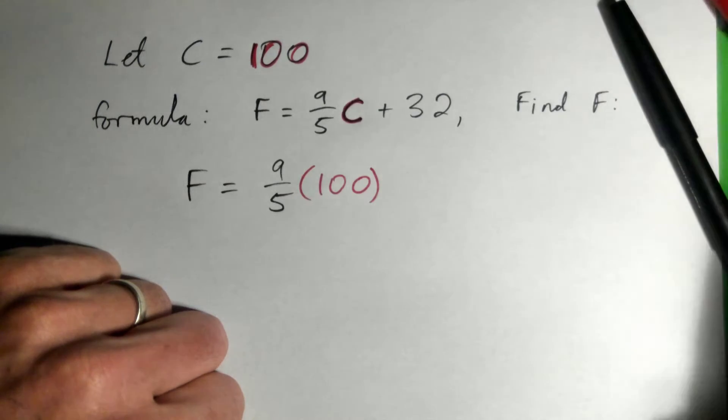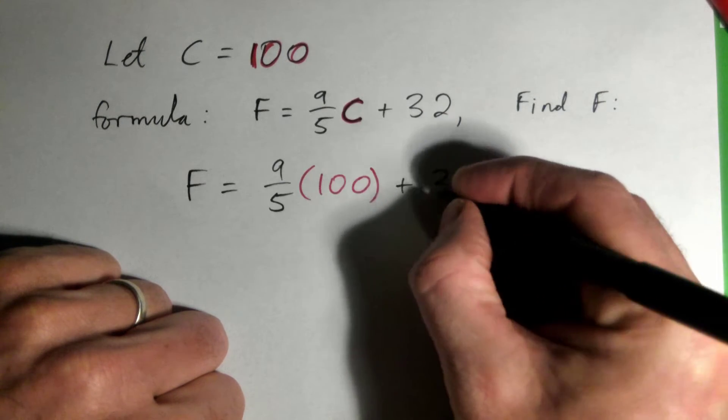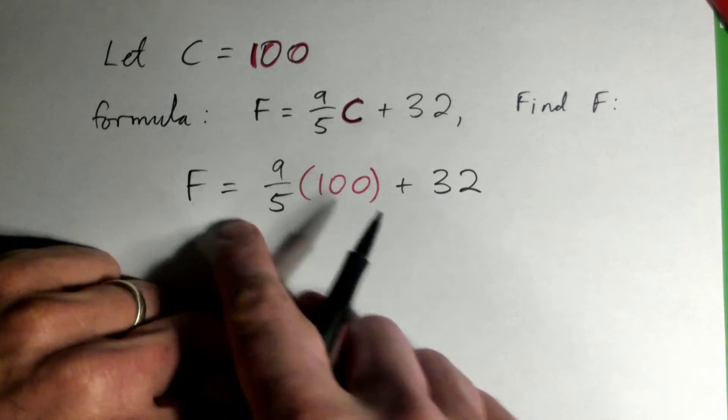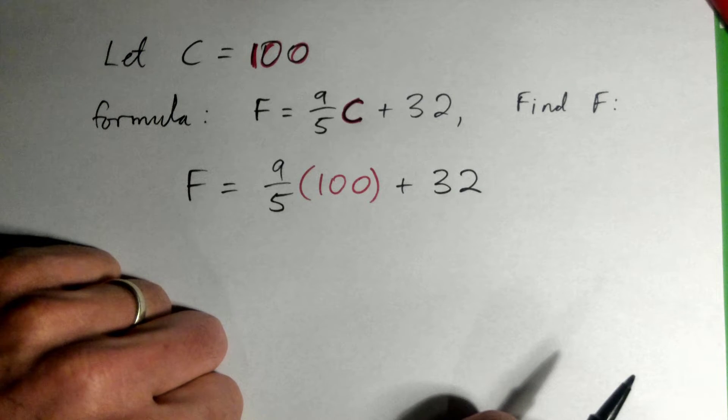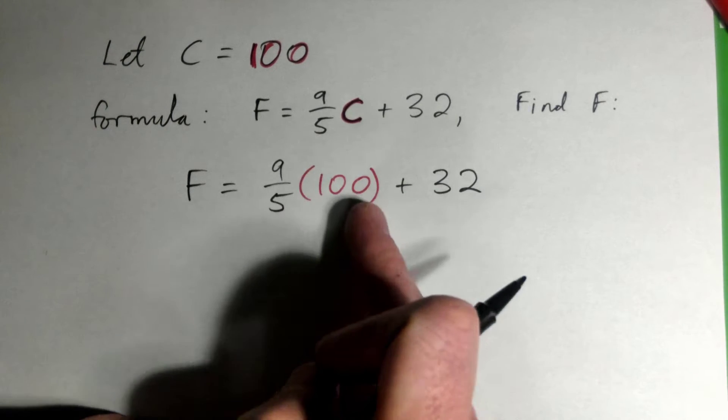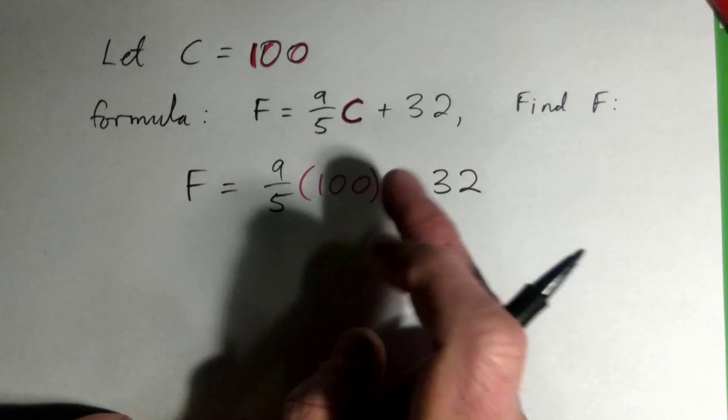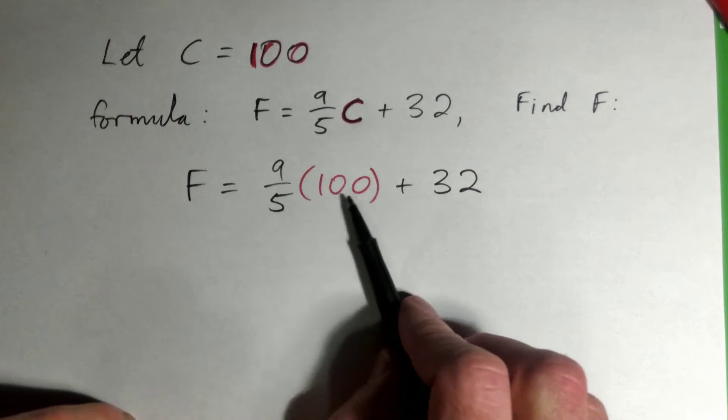Right, and then we need to work this out. Okay, so I've got nine-fifths times a whole number. If I'm multiplying like this, shouldn't I change the whole number to a fraction?